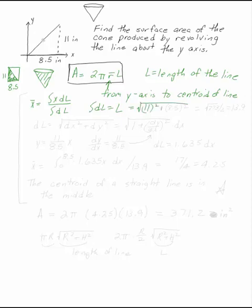So we can find that using the Pythagorean theorem. This is 11 squared plus 8.5 squared, which is the square root of 773 over 2, 13.9 inches. That's the length of the line.